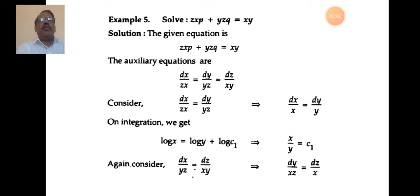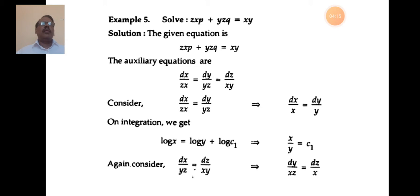On integrating both sides: ∫dx/x = ∫dy/y + log c₁, which gives log x = log y + log c₁. This implies log x − log y = log c₁, so log(x/y) = log c₁. Cancelling log on both sides: x/y = c₁. This is the first solution.